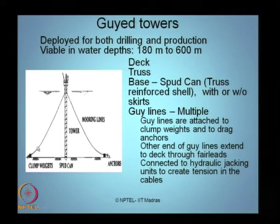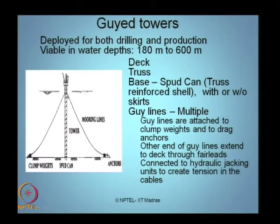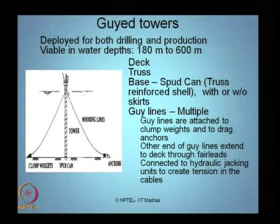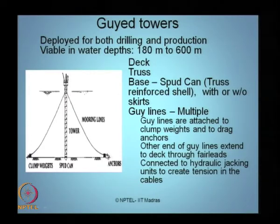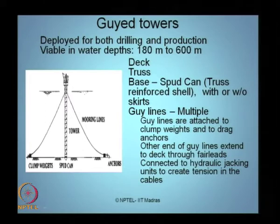An essential component is what we call a mooring line, or more specifically a guy line. Guy lines are attached to clump weights and then to drag anchors to hold the guy lines firmly to the seabed. One end of the guy line is attached to the clump weight and further to drag anchors. The other end passes through a point called a fair lead. The point connecting the guy line to the seabed is called the touch-down point, where clump weights and drag anchors hold the guy lines down. Once the guy lines are connected to the tower through the fair lead, the topside has complicated hydraulic jacking units through which tension is created in these lines.